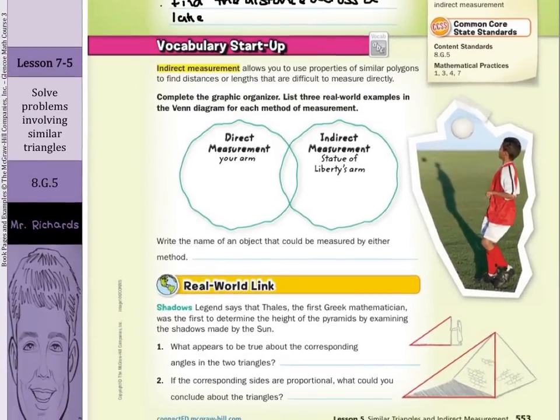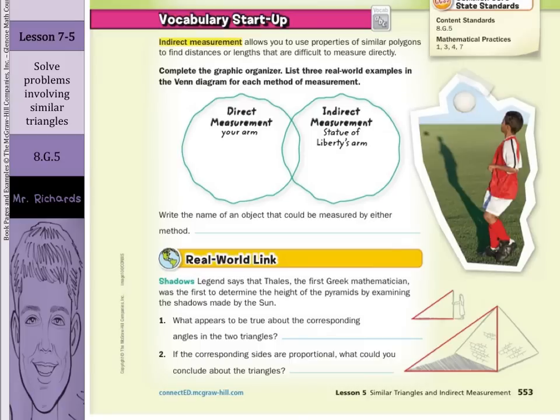Indirect measurement allows you to use properties of similar polygons to find distances or lengths that are difficult to measure directly. Complete the graphic organizer, list three real-world examples in the Venn diagram for each method of measurement.